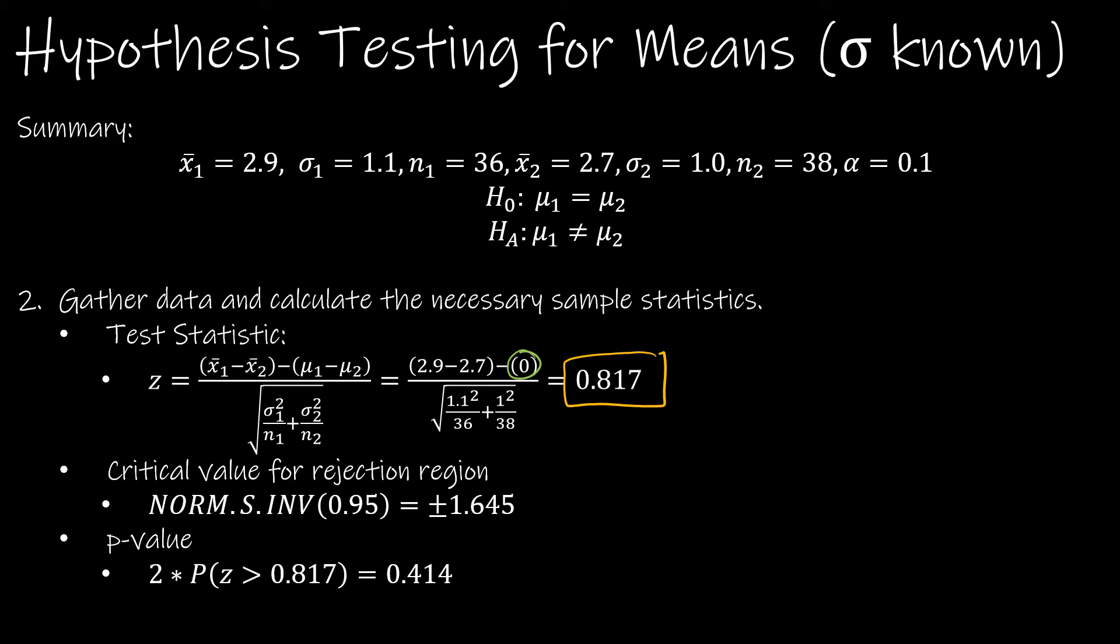The critical value for the rejection region—remember, it's two-tailed. How do I find the critical value? Well, if alpha is 0.1, remember for a two-tailed, I have alpha over 2 over here, and I have alpha over 2 over here. So that means there's 0.05 in each tail.